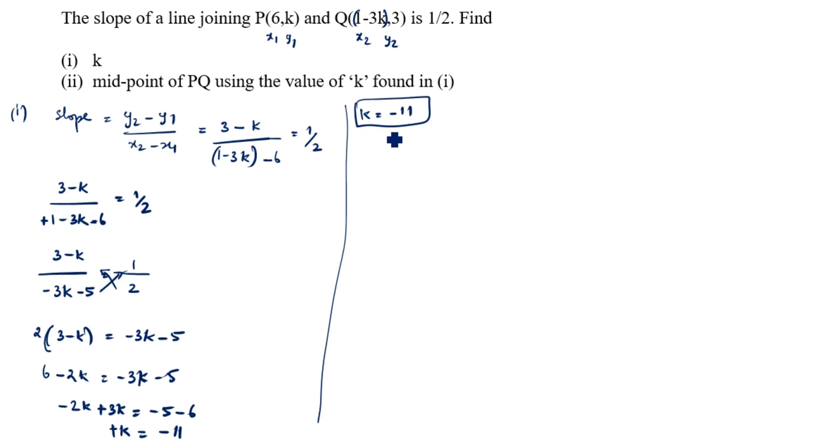We will substitute the k value in P and Q. What comes when we substitute k value? P is (6,-11). Q is 1 minus 3 into -11 comma 3. So P is (6,-11).